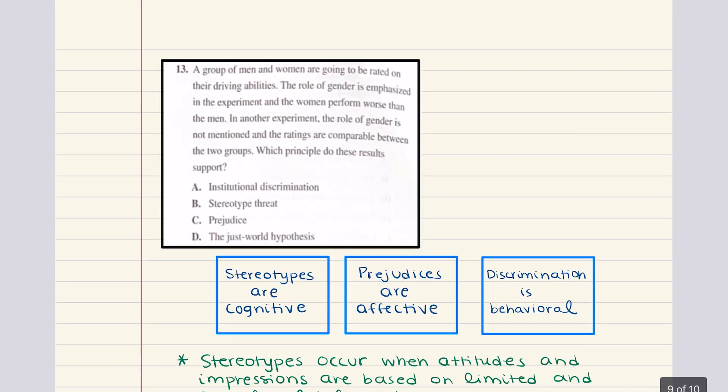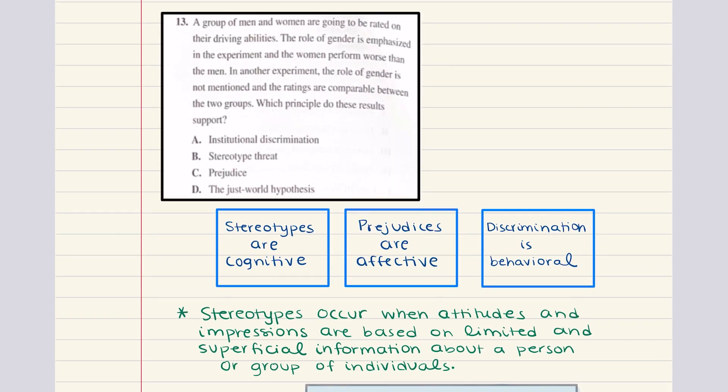Let's go ahead and move into problem 13. 13 says a group of men and women are going to be rated on their driving abilities. The role of gender is really emphasized in the experiment and the women perform worse than the men. In another experiment, the role of gender is not mentioned and the ratings are comparable between the two groups. Which principle do these results support? This is stereotype threat. Remember, stereotype threat refers to the concept of people being concerned or anxious about confirming a negative stereotype of their social group. Stereotype threat can hinder performance creating a self-fulfilling prophecy. When we talked about this in lecture,